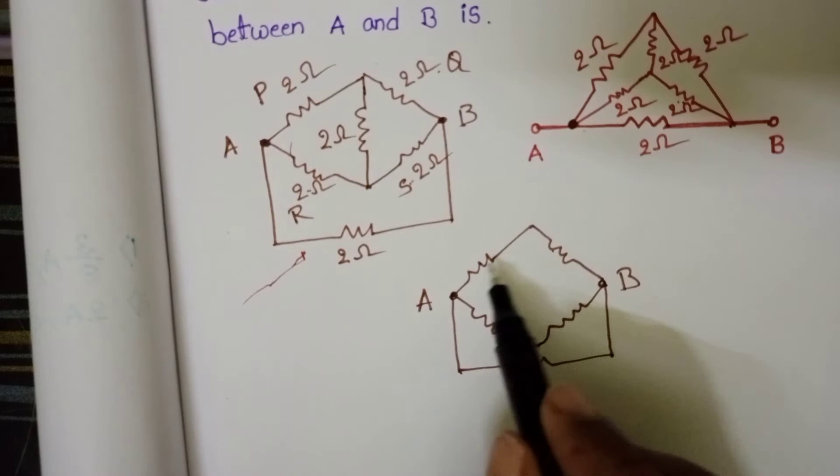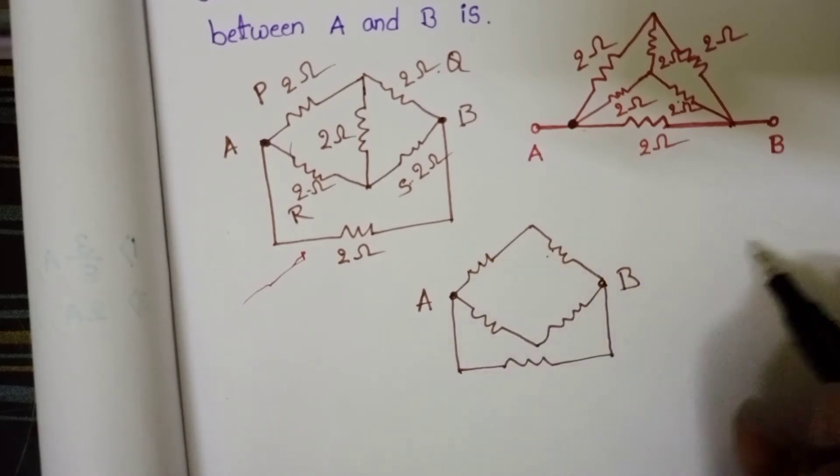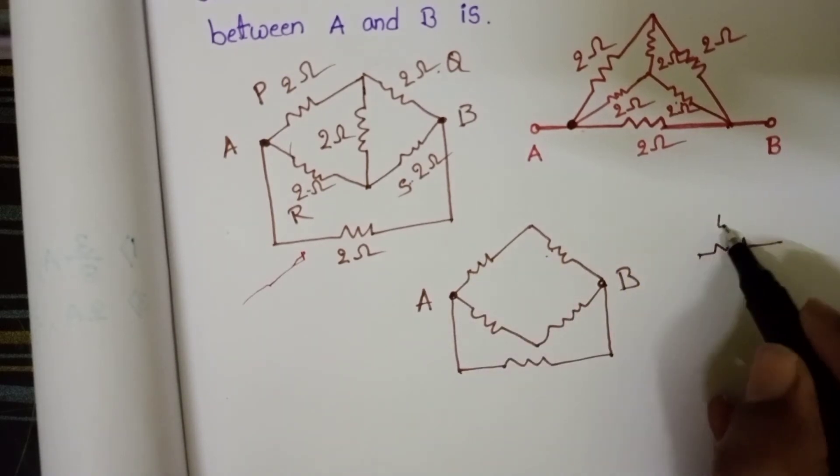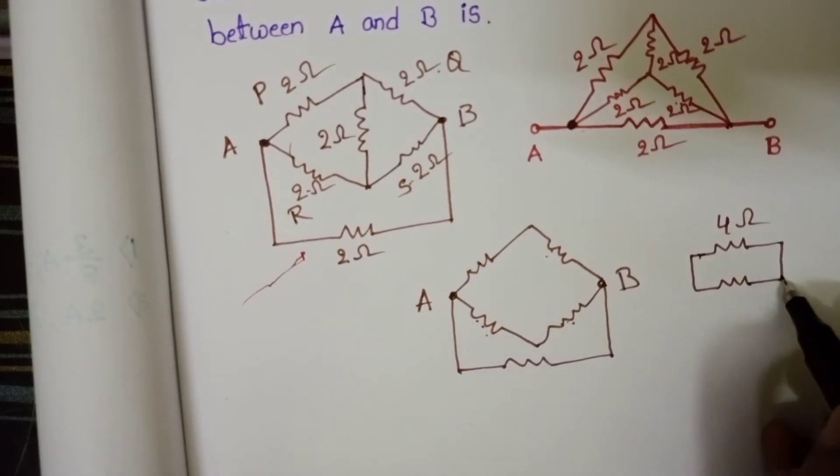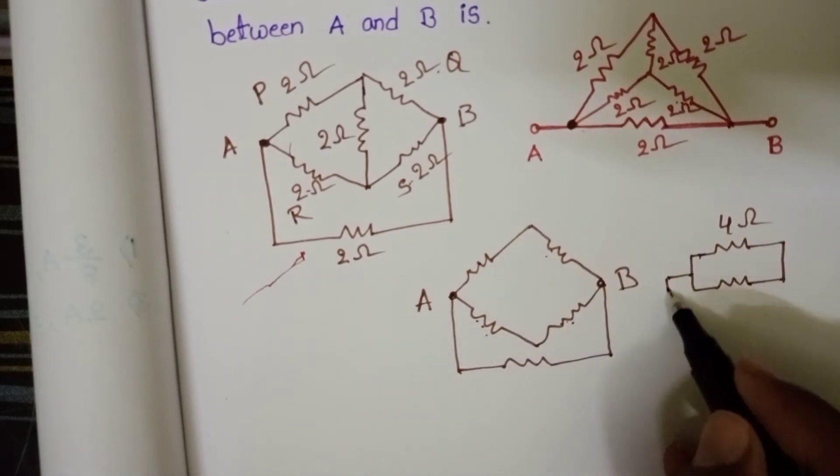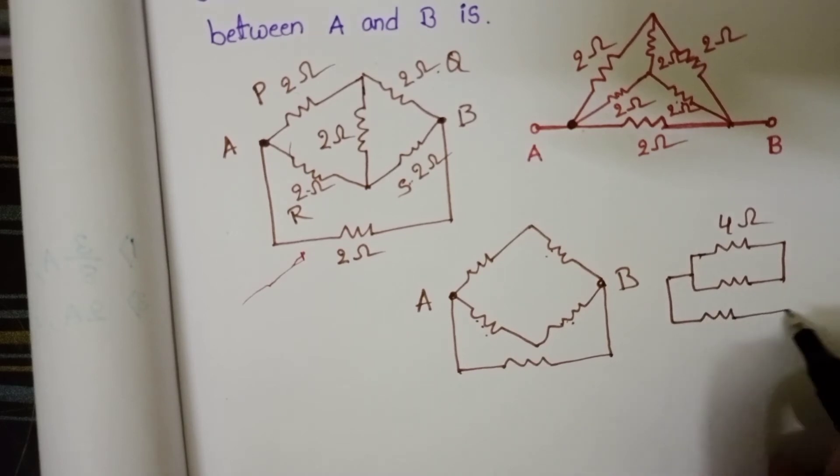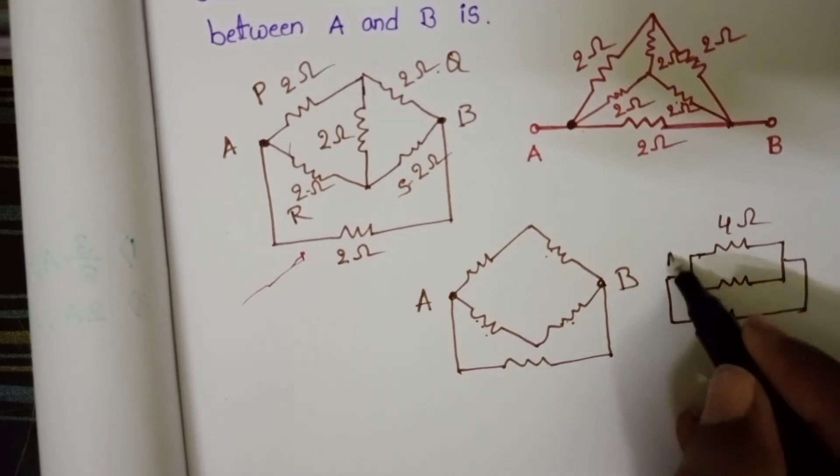Now the equivalent resistance of these 2 resistors becomes 4 ohm. And now here another resistor 2 ohm connected.